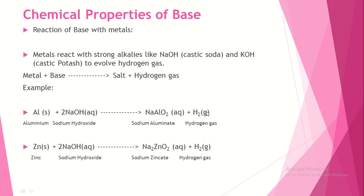You need to write all these reactions in your notes. Questions often ask: what happens when sodium hydroxide reacts with aluminium? — it produces sodium aluminate and hydrogen gas evolves. Or: what happens when zinc reacts with sodium hydroxide? — sodium zincate and hydrogen gas are produced. You must also learn: what happens when zinc reacts with sulfuric acid? Learn all these chemical reactions carefully.